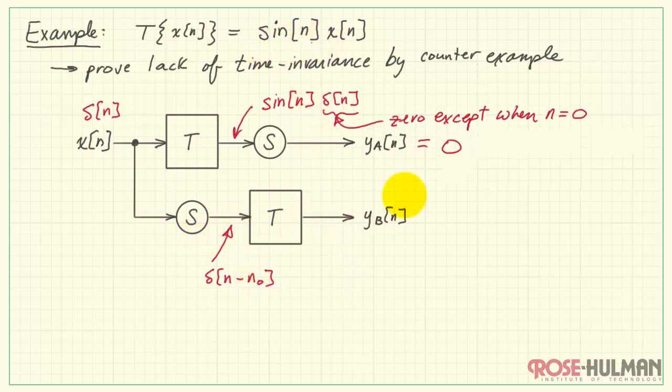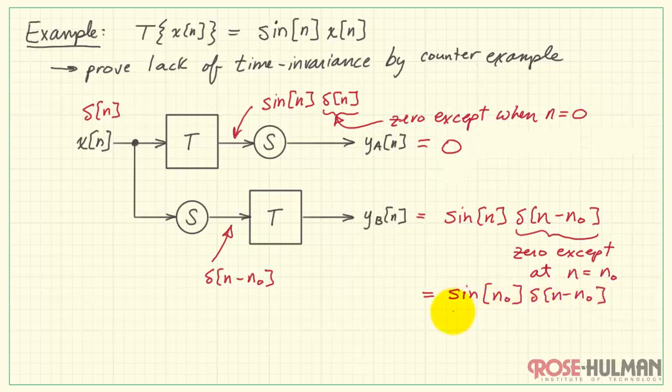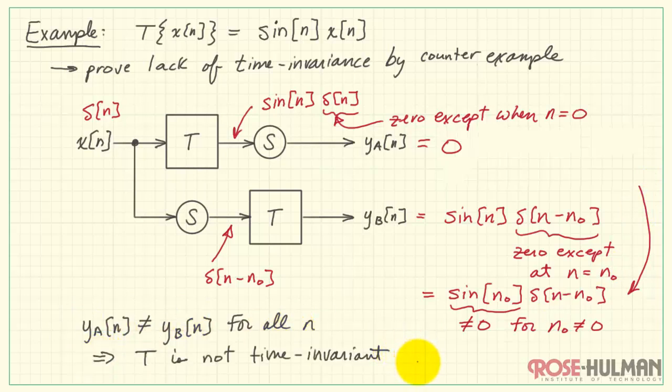With the pre-shifted version of the delta function passing through the system operator, we have sine of N times delta of N minus N-naught. Now, the question is, is this equal to 0 for all time? Well, we know that the delta function is 0 except at N equals N-naught. However, sine of N-naught is not equal to 0, at least for N-naught not equal to 0. Therefore, we found a specific example where YA and YB are not equal to each other. And from this, we conclude that the system is not time invariant.